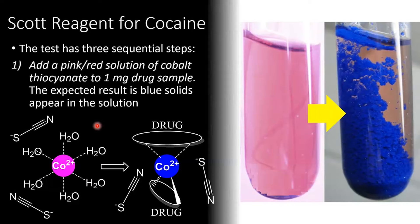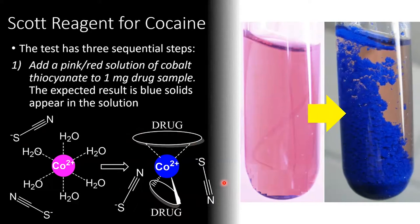In this state, cobalt is octahedral, which gives it a pink colour. When a sample of cocaine is added to this solution, the cocaine can coordinate to the cobalt, knocking away the water molecules. Cocaine is a lot bigger than water, so fewer cocaine molecules can fit around the cobalt atom. So what we get is a change from octahedral to tetrahedral, and this change in coordination geometry causes the colour of the metal to shift from pink to blue.